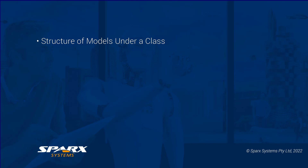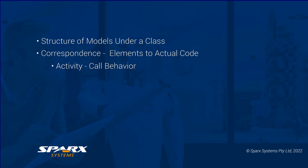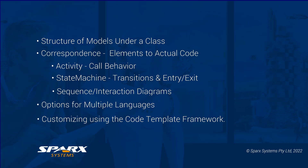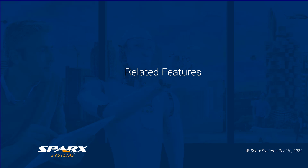To give a summary of the topics covered in this webinar: we firstly looked at the structure from the class down. Then we looked at the correspondence from elements to actual code for activities including core behaviours, state machines including transitions and entry-exit-do, and sequence diagrams. We then looked at a range of languages supported and the option for defining modelling for specific languages. Finally, we looked at customising the generated code using the code template framework. In this webinar we covered the standard behavioural model code generation. There are numerous other Enterprise Architect features in common with this.